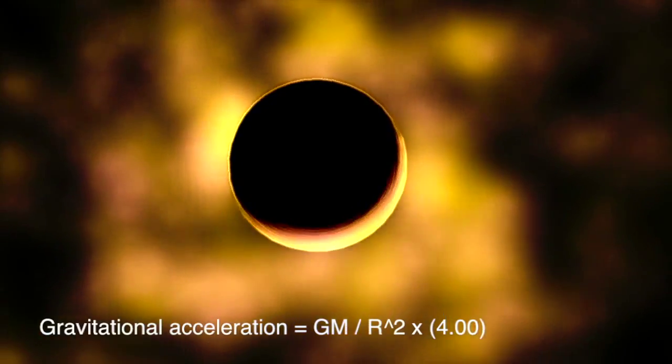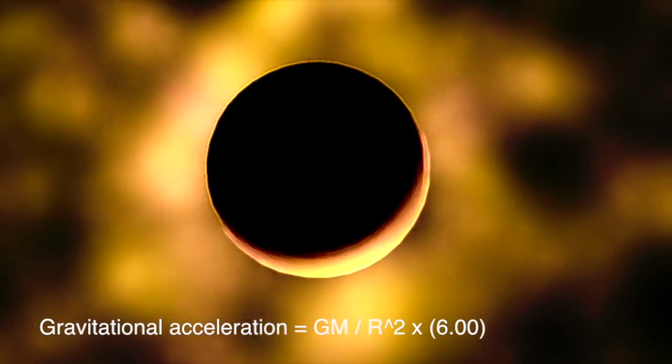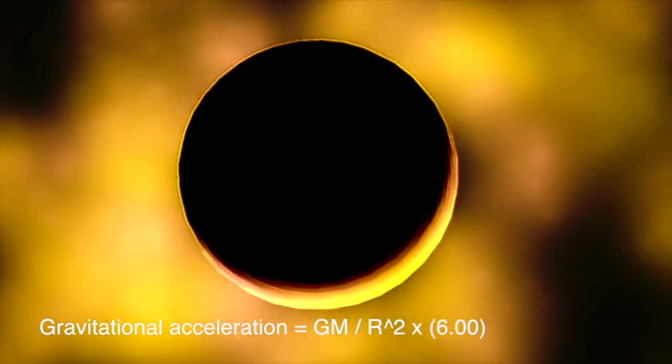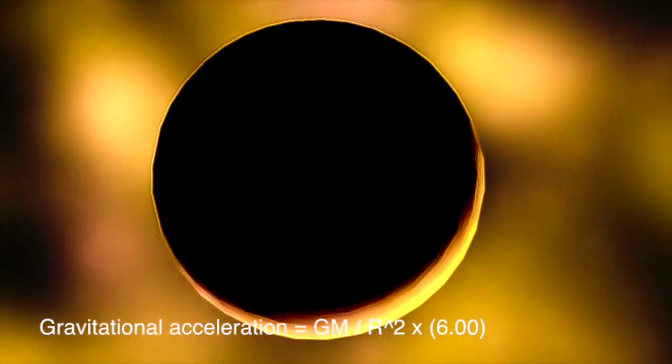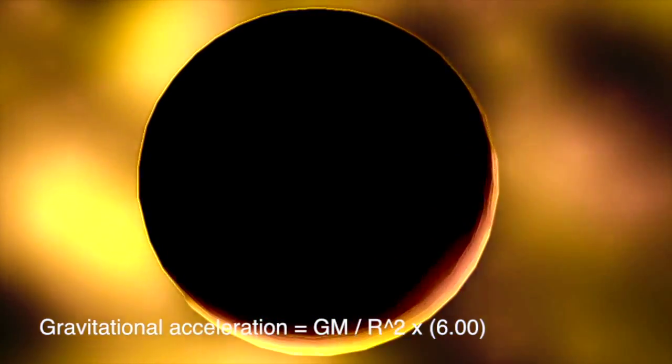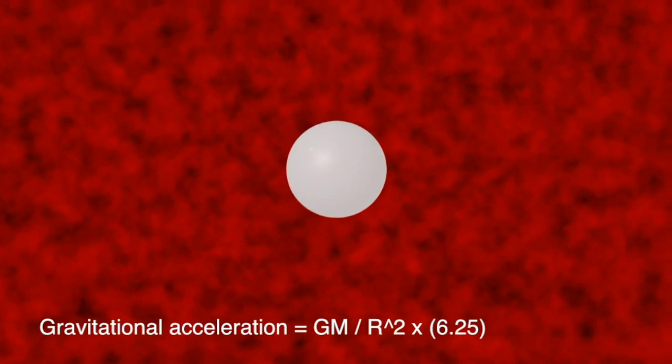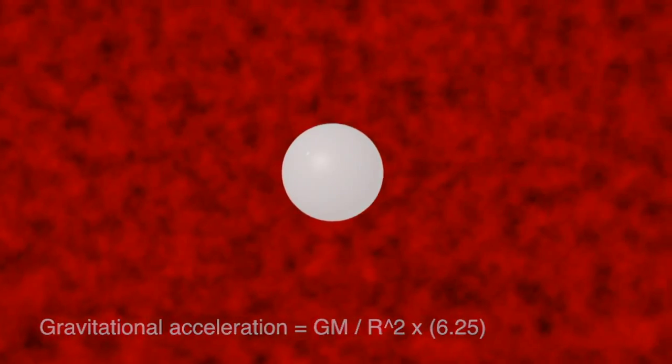Once the observer comes closer to the black hole, as the event horizon is approached, the acceleration due to gravity rises by a factor of 6.25. It is no coincidence that 6.25 is the exact ratio between ordinary matter and dark matter as seen in the universe.